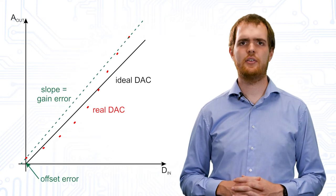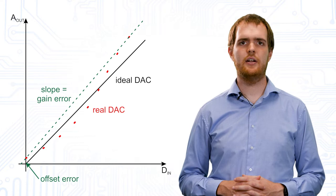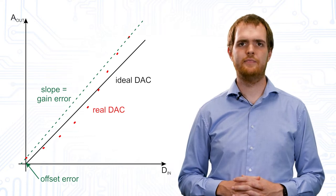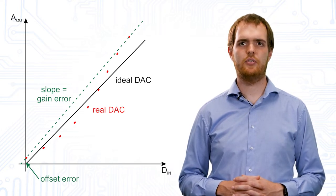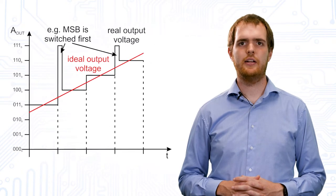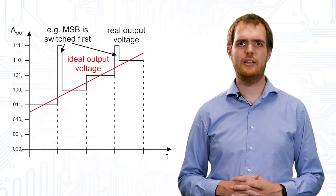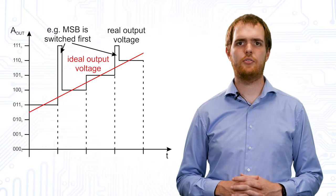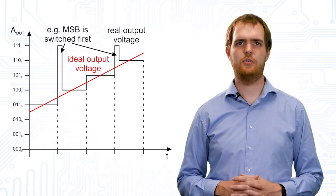There are offset errors, gain errors, and integral and differential nonlinearities. In addition, there is also the possibility of bit glitches. Glitches are voltage spikes caused by a change in a digital input value, which in turn cause short-term changes in the analog output value.